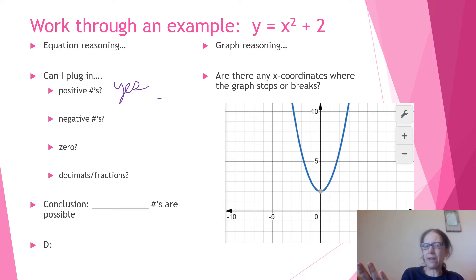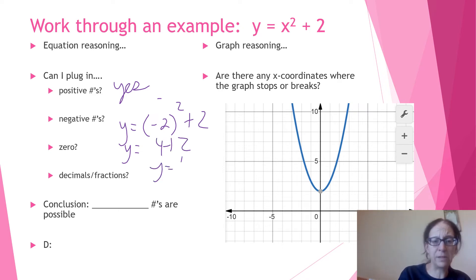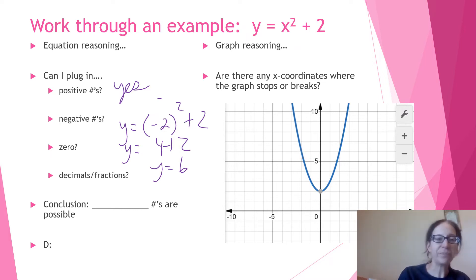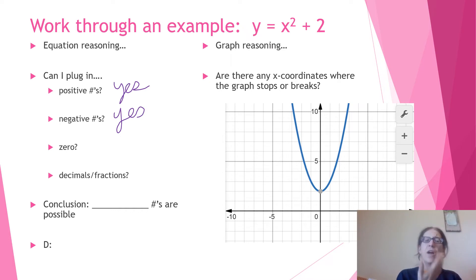Can you plug in negative numbers? Try negative 2: negative 2 times negative 2 is positive 4, and 4 plus 2 is 6 — no issue there. If you look at the graph, negative 2 corresponds to that point right there. You can square any negative number and get a positive, then add 2 — so there's no issue with negative numbers. What about zero? Zero squared plus 2: zero times zero is zero, and zero plus 2 is 2. Plugging in zero seems fine.